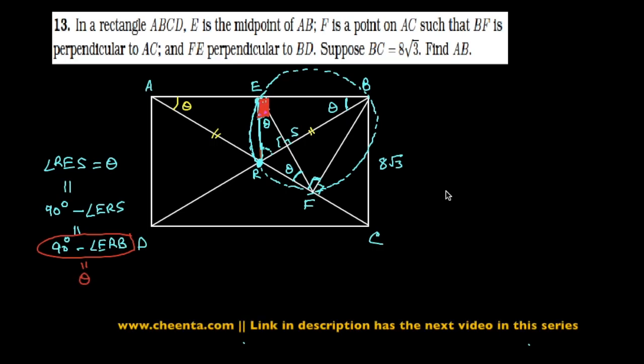That's what our contention is—that angle RES is theta. So how does that help? That helps because it immediately says that triangle ERF is isosceles, because the base angles are equal, which would mean that ER equals RF.